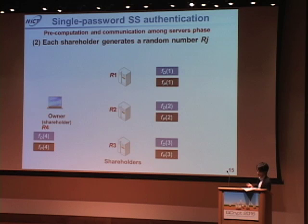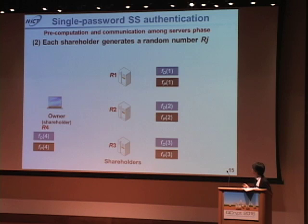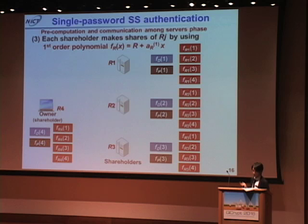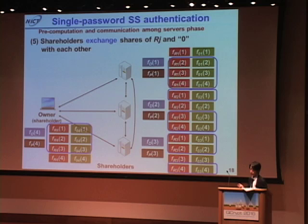One unique point of our scheme is it has a pre-computation and inter-server communication phase, which is necessary to guarantee information theoretical security in the data reconstruction phase. In this phase, each shareholder generates a random number and makes shares of it using a first-order polynomial. Shareholders then exchange shares of the random number and zero with each other.